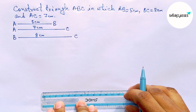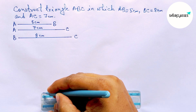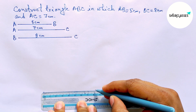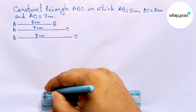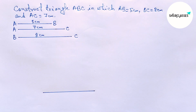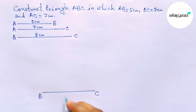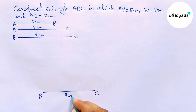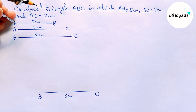With the help of a scale, marking 0 and 8 — drawing a line segment of length 8 centimeters and labeling it B and C, so BC equals 8 centimeters. Next, measure the length AB equals 5 centimeters with the help of a compass.